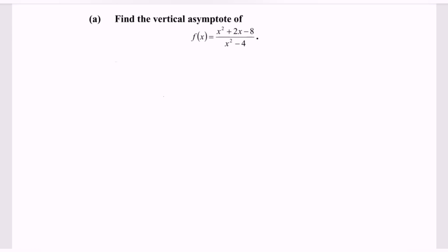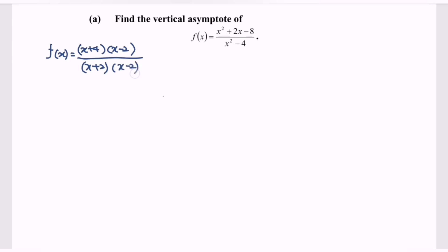Here we have the alternative solution for finding the vertical asymptote. Observe the situation where we have x² + 2x - 8. If we factorize, we will have (x + 4)(x - 2). Kindly observe the denominator — we can also factorize to get (x + 2)(x - 2). If we simplify, we will have f(x) = (x + 4) / (x + 2).